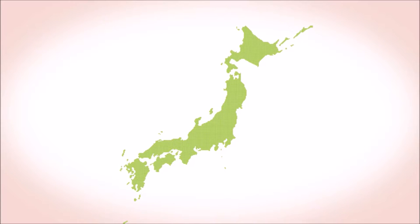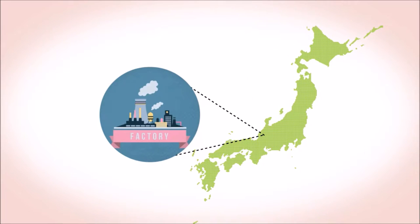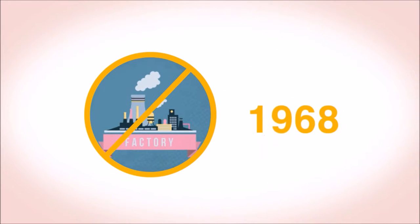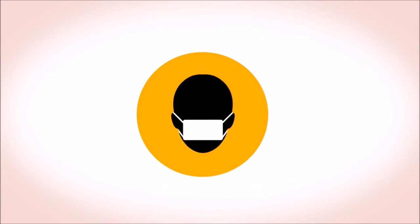In Minamata, Japan, a polluting mercury fungicide factory was closed in 1968, yet people there have continued to be affected by mercury poisoning, the so-called Minamata disease, ever since, because the fish caught locally in the bay still have traces of mercury in them.